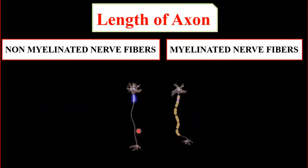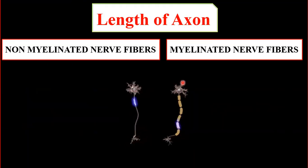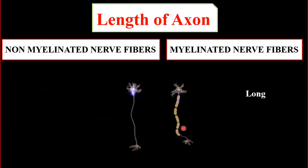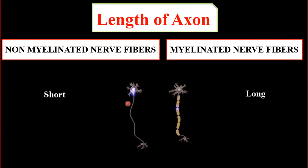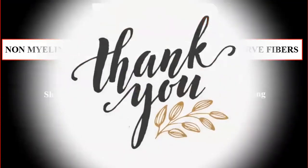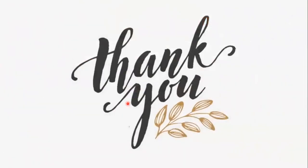Regarding length: myelinated nerve fibers, found mostly in the peripheral nervous system, are long, while non-myelinated nerve fibers, most specifically present in the central nervous system, are short. These were all the differences between the two types of nerve fibers classified on the basis of their structure.